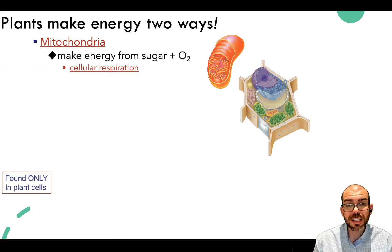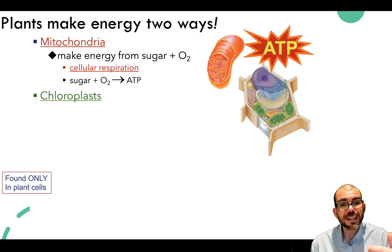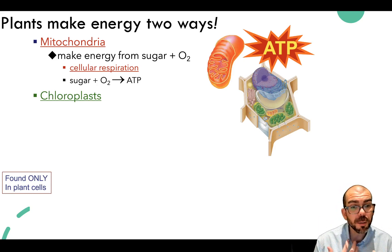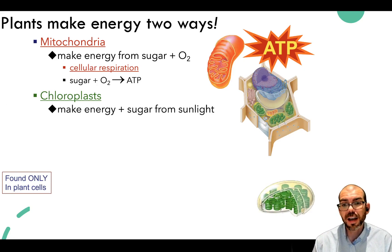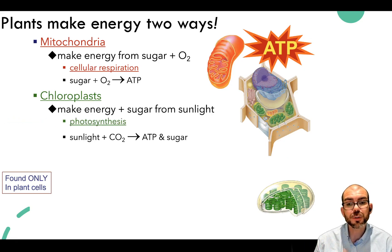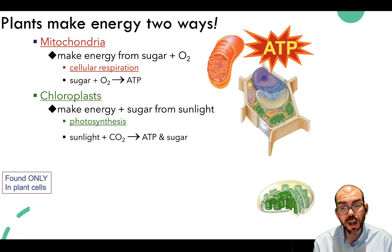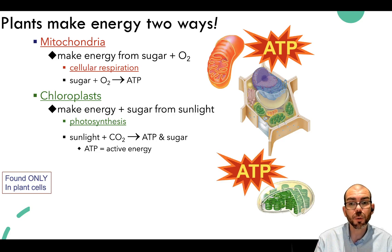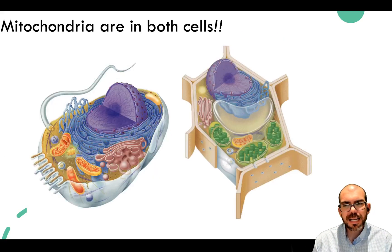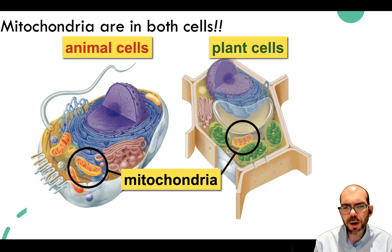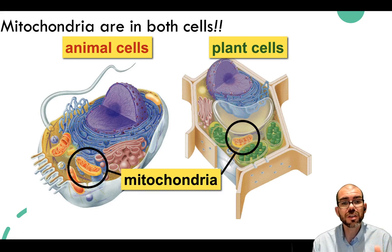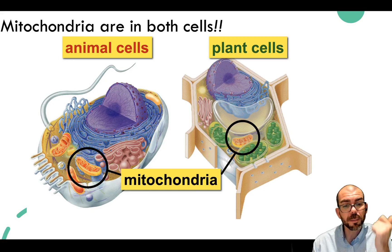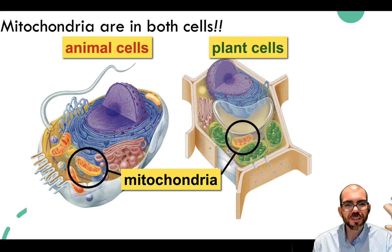Plant cells also have mitochondria—they need to break down sugar to make ATP—but plants don't eat. The chloroplast is the organelle that makes their food: it takes energy from sunlight and molecules from the atmosphere, specifically CO2 and water, and uses that to build sugar. After the chloroplast builds the sugar, it goes to the mitochondria where it's broken down and turned into ATP. A common misconception is that plant cells only have a chloroplast—in fact, plants need both: the chloroplast to make food and the mitochondria to break it down.